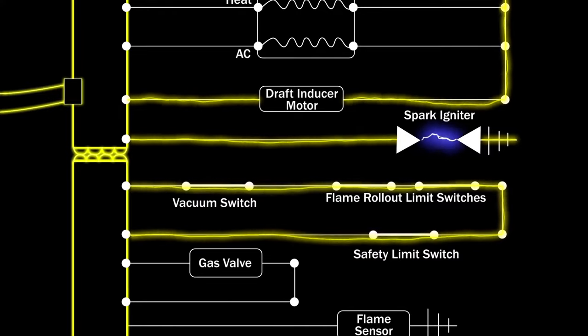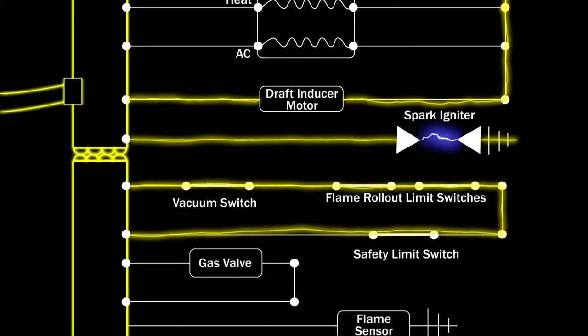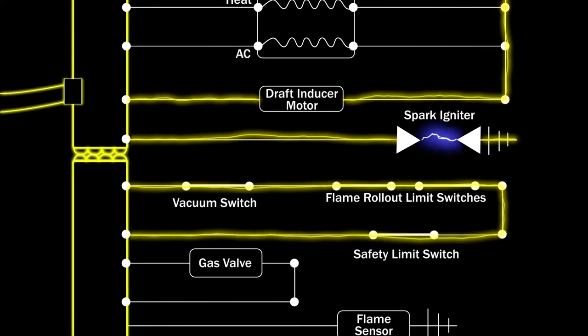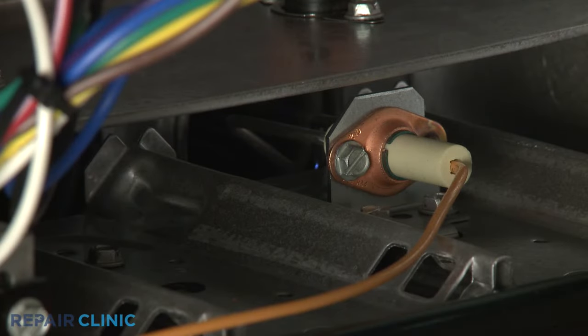Spark igniters will also receive voltage from the control board or ignition module, but the amount of voltage is greatly increased and will pulse to create the spark that ignites the gas.